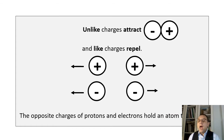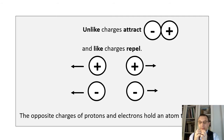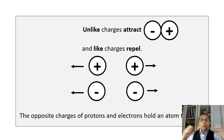Another thing to keep in mind: unlike charges attract, and like charges repel. If we have a positive particle and a negative particle, they will get together. If we have 2 positive particles, they will move away from each other. If we have 2 negative particles, they also will move away from each other. This is important because the opposite charges of protons and electrons hold an atom together.